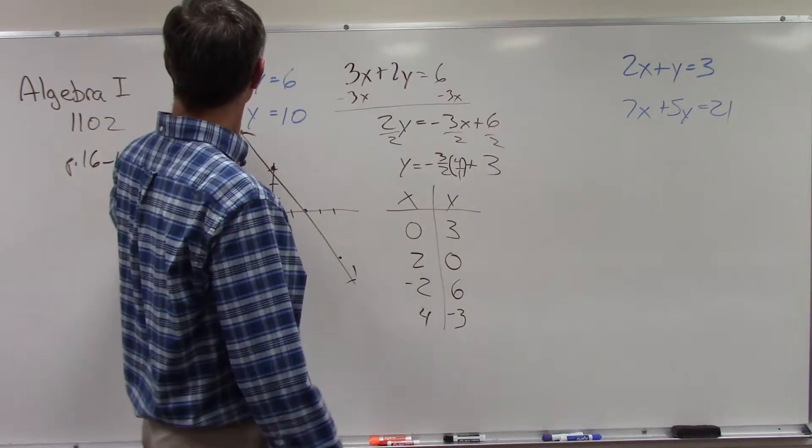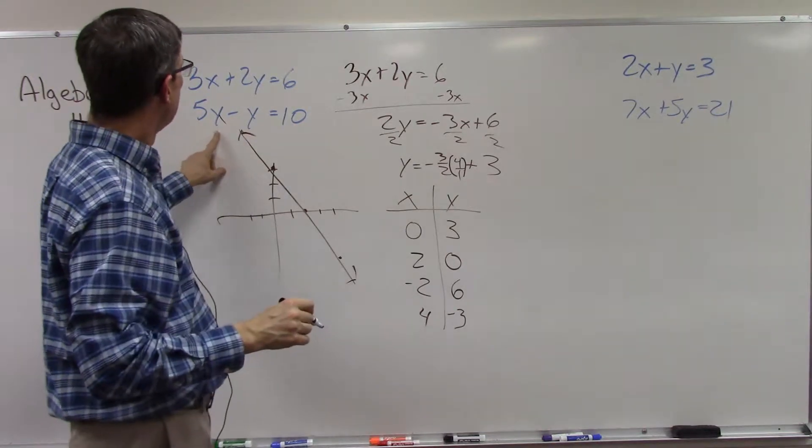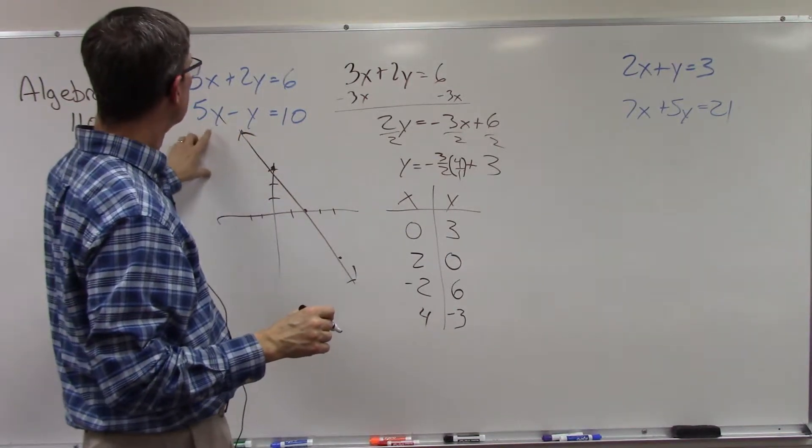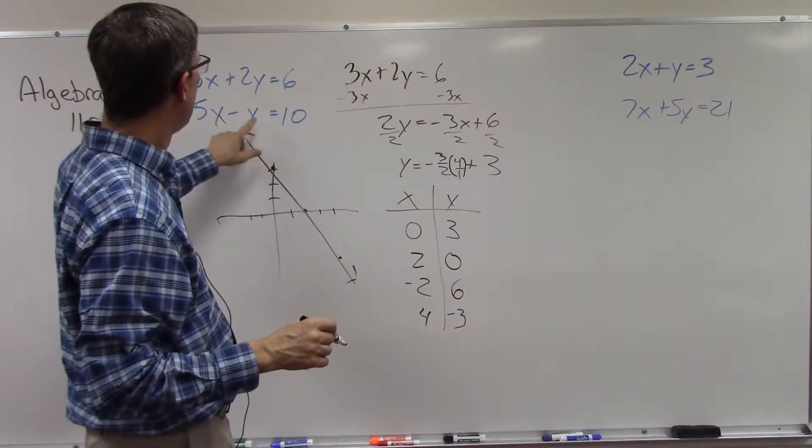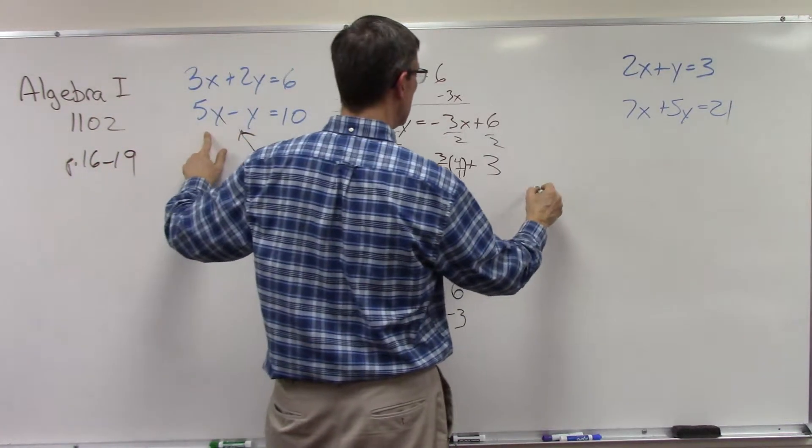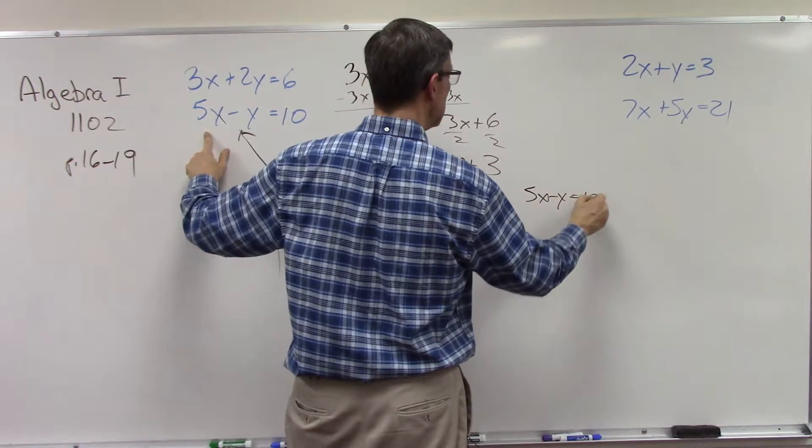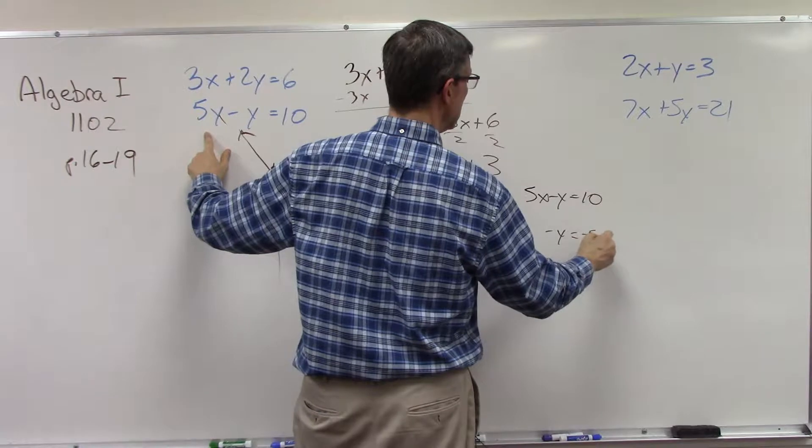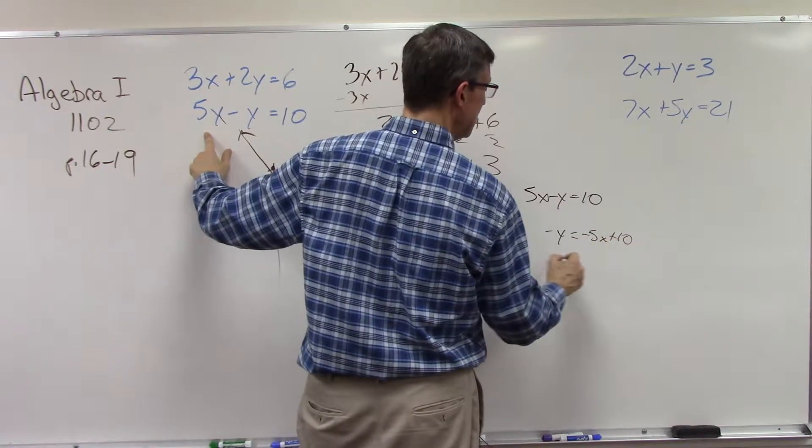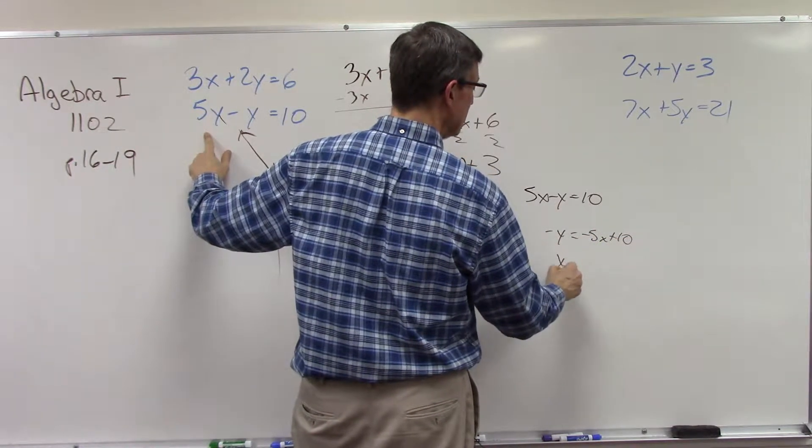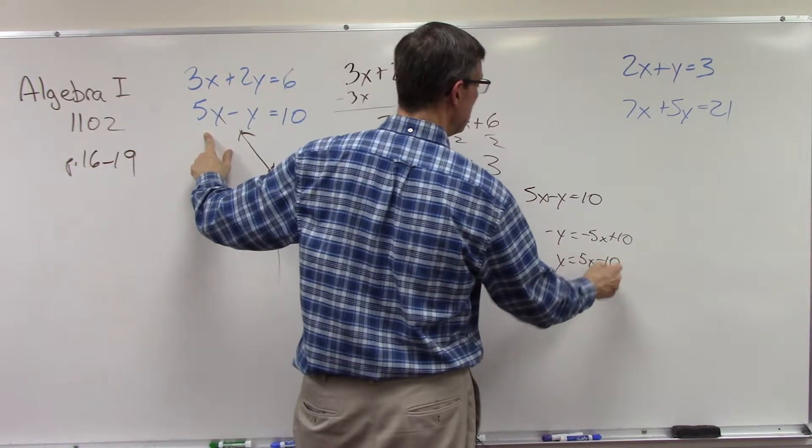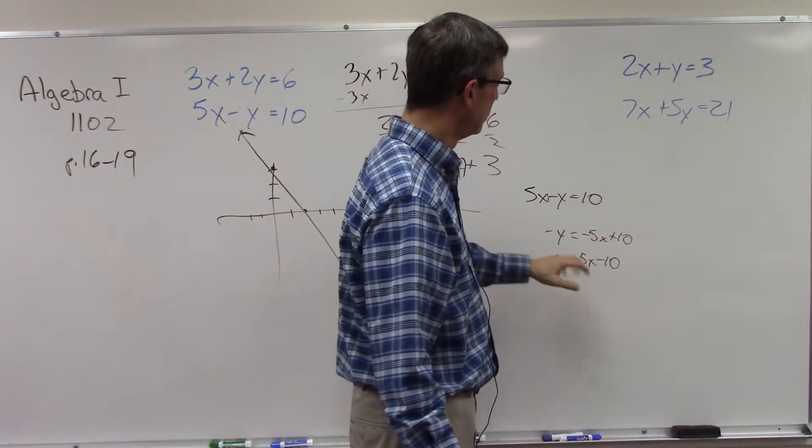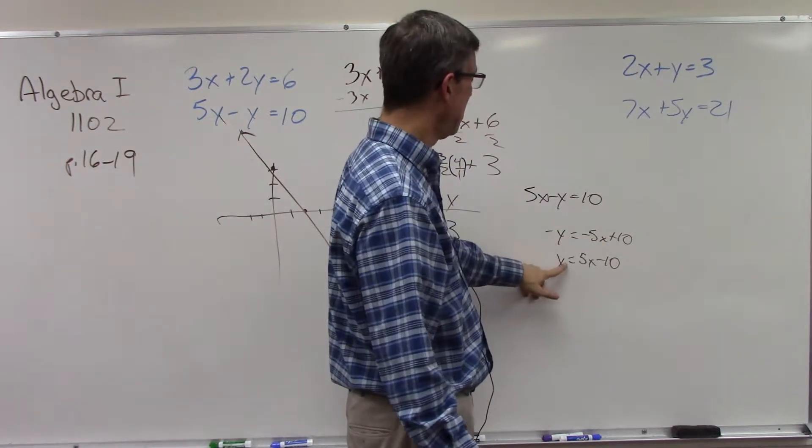Now this line over here, this should have been 5x minus y equals 10. We can do a similar thing here where we solve for y. 5x minus y equals 10. Subtract 5x from both sides. Negative y equals negative 5x plus 10. Then divide by negative 1. So y equals positive 5x minus 10. If you multiply them all or divide them all by negative 1, now it's positive y.